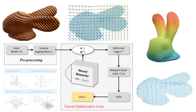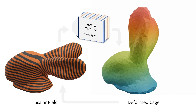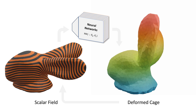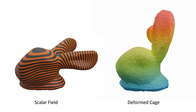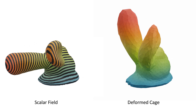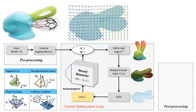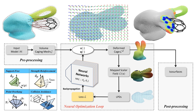Different loss functions are defined for different manufacturing requirements. As our pipeline is differentiable, backpropagation can be realized to minimize its loss functions. The optimization is conducted iteratively so that the scalar field can be optimized in the model space. After that, we can extract its isocurves on the caging mesh, which are trimmed to obtain the curved layers for printing.